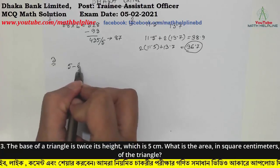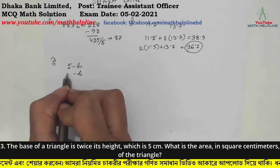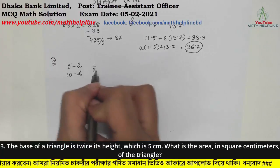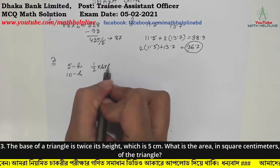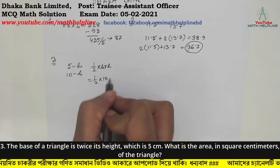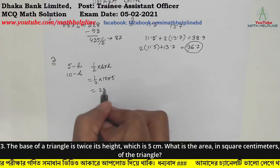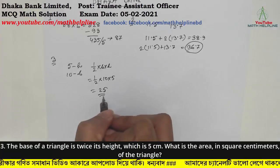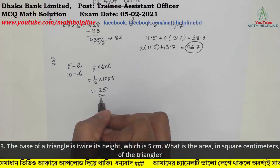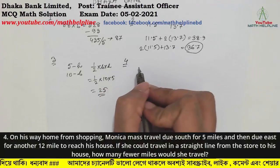The area of a triangle is half into base into height. Half into base (10) into height (5) equals 25 square cm. So the area of the triangle is 25 square cm.